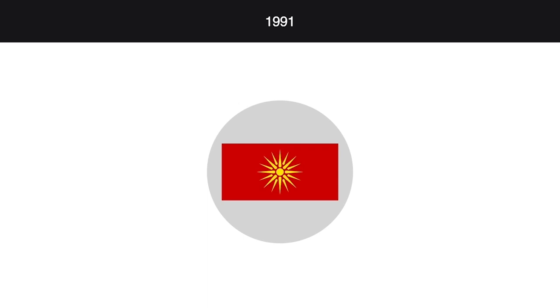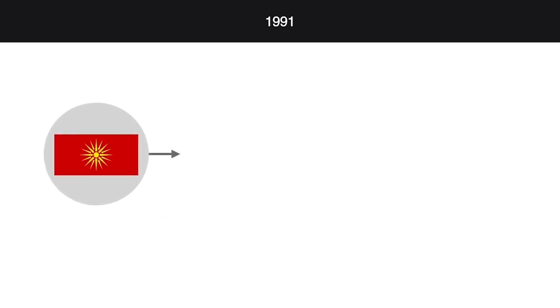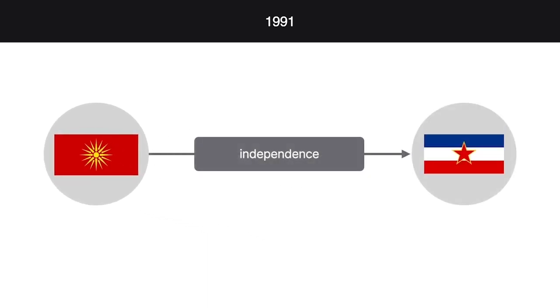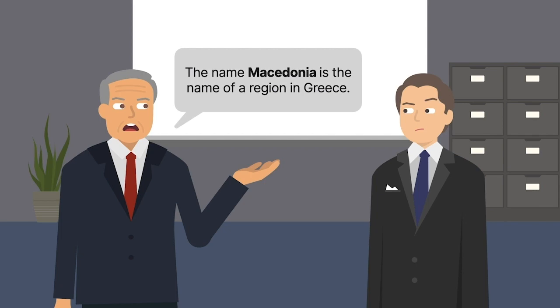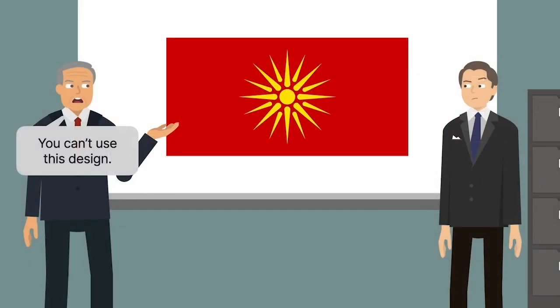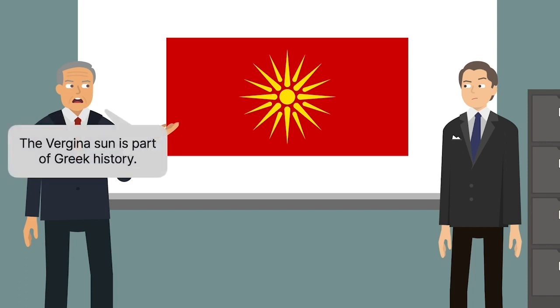In 1991, the Republic of Macedonia, referred to here as Macedonia, declared its independence from Yugoslavia. Greece objected to the use of the name Macedonia because, among other reasons, a region in Greece was also named Macedonia. Greece also objected to Macedonia's flag design because it contained a Vergina Sun, which Greece claimed is part of Greek history and culture.